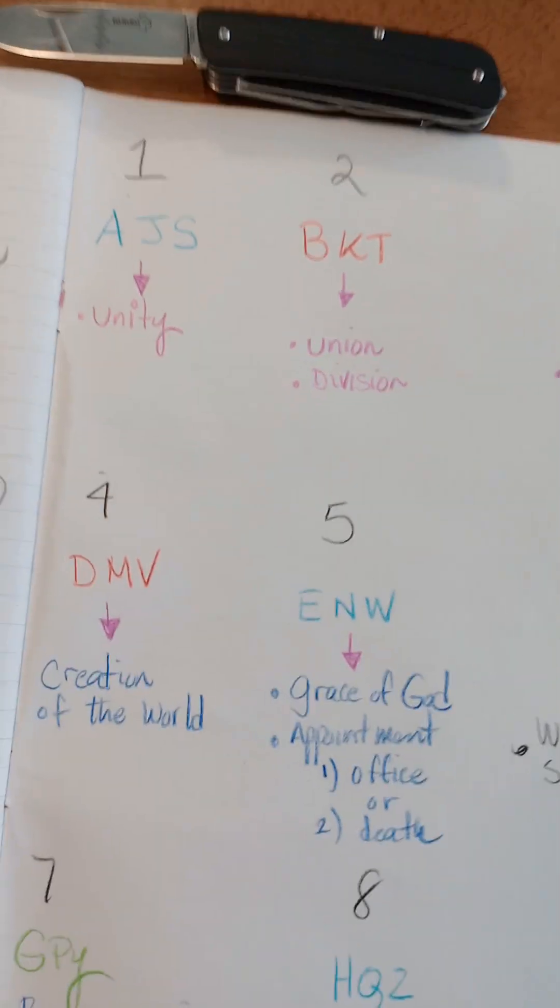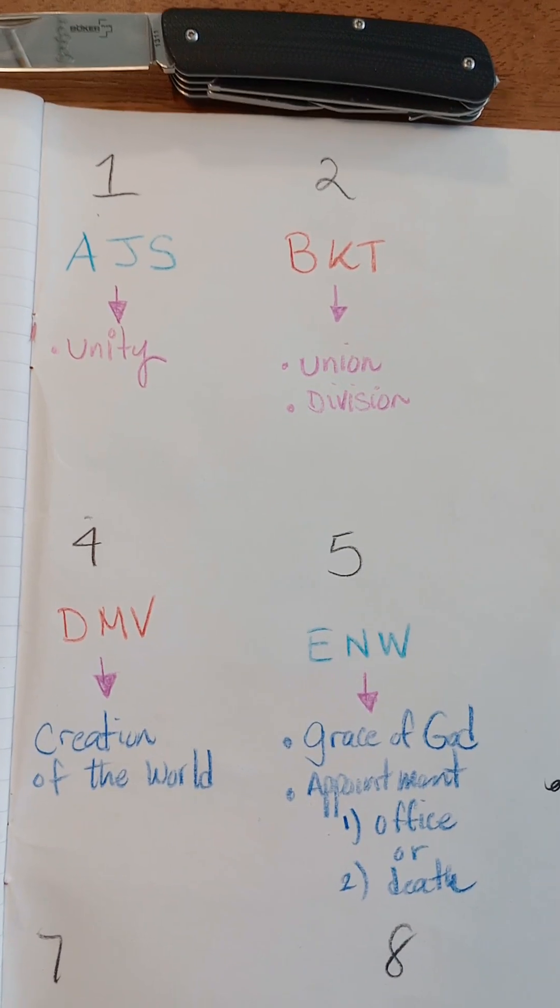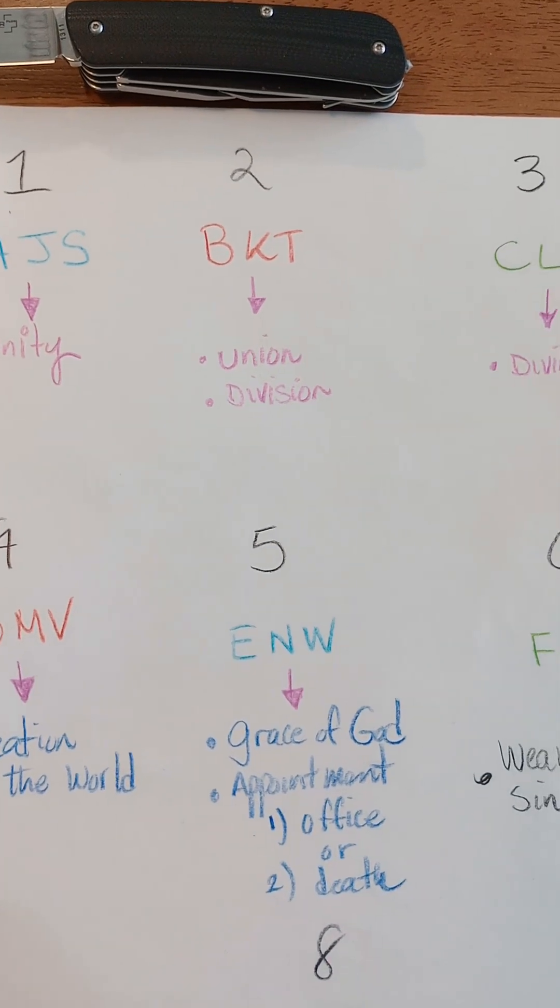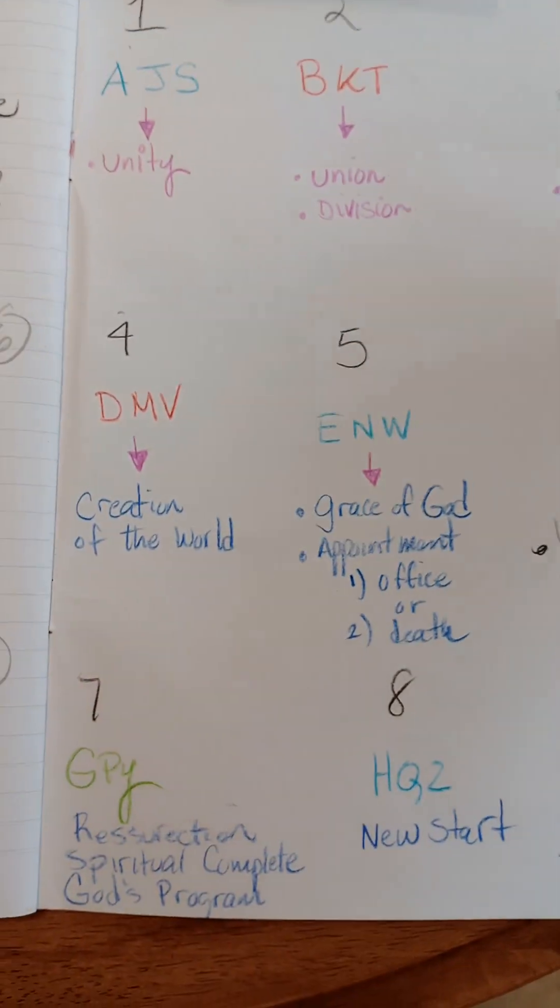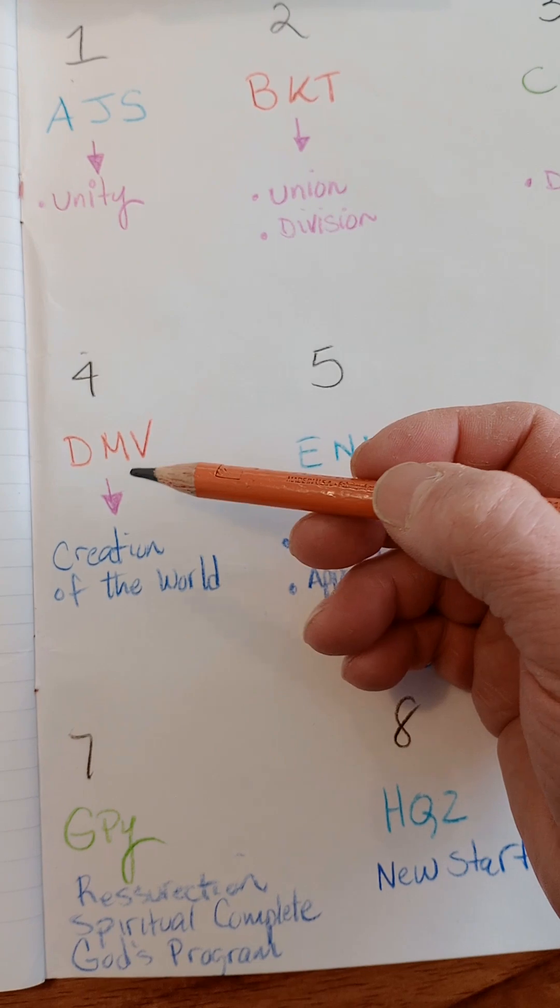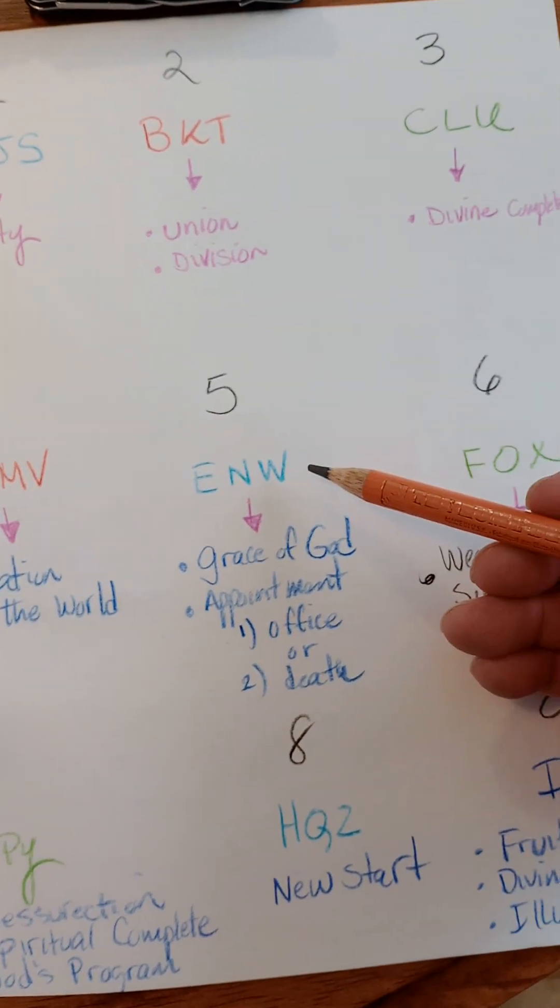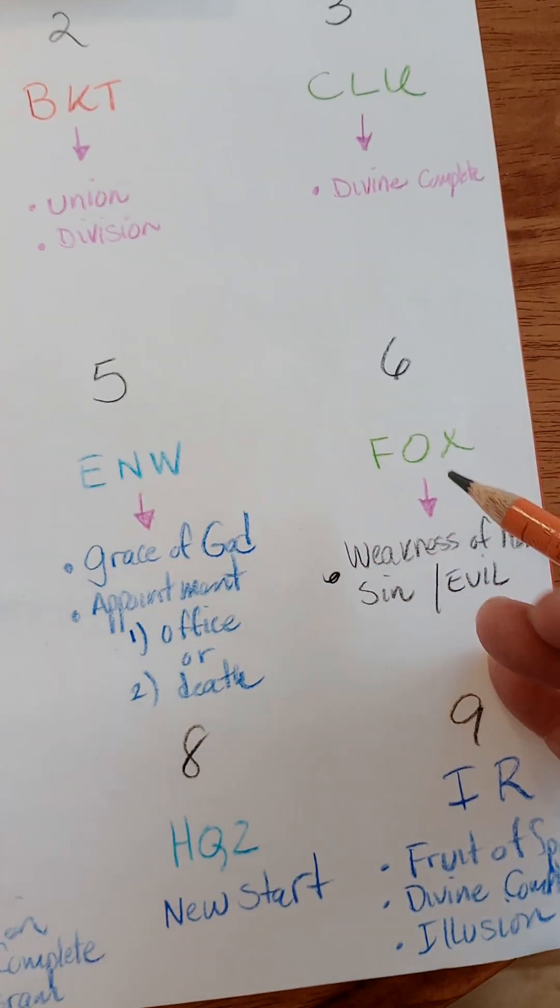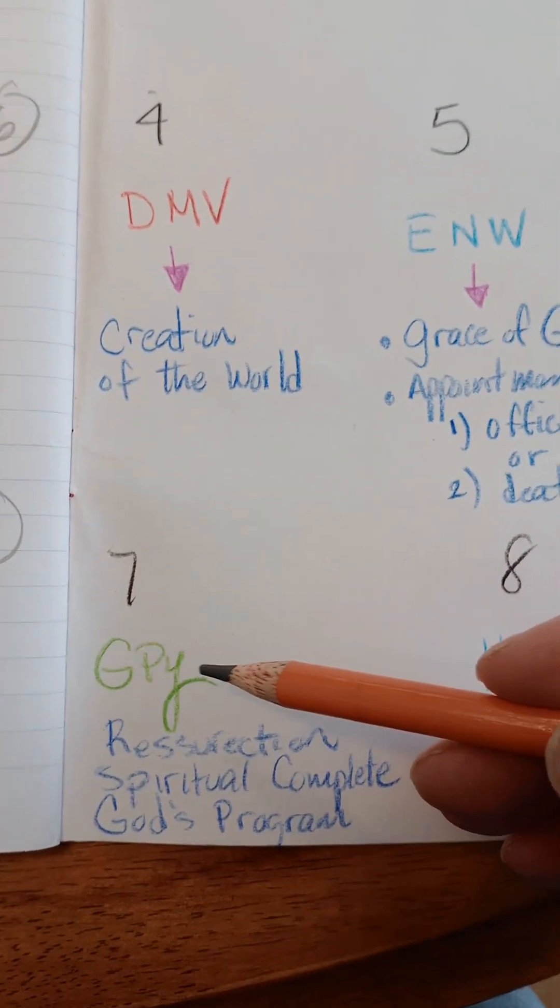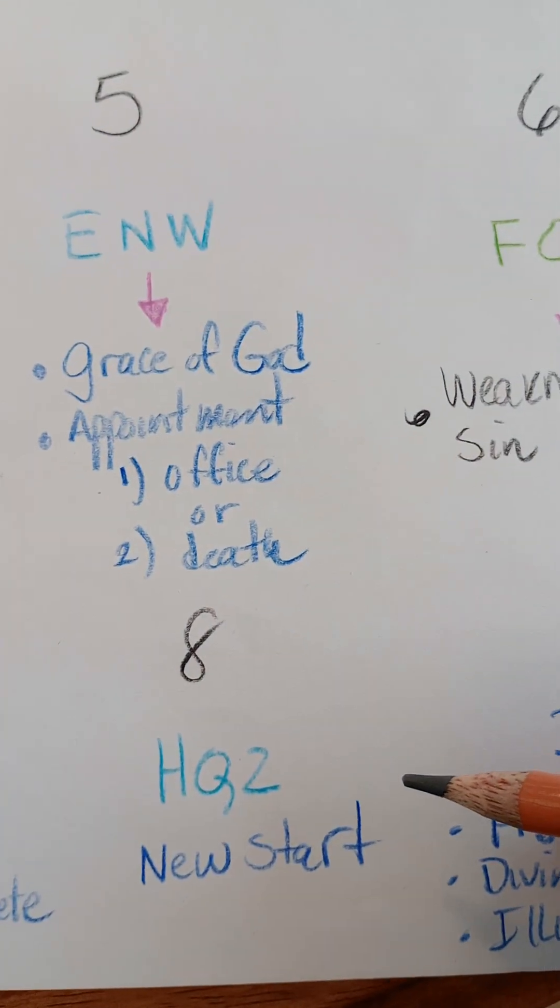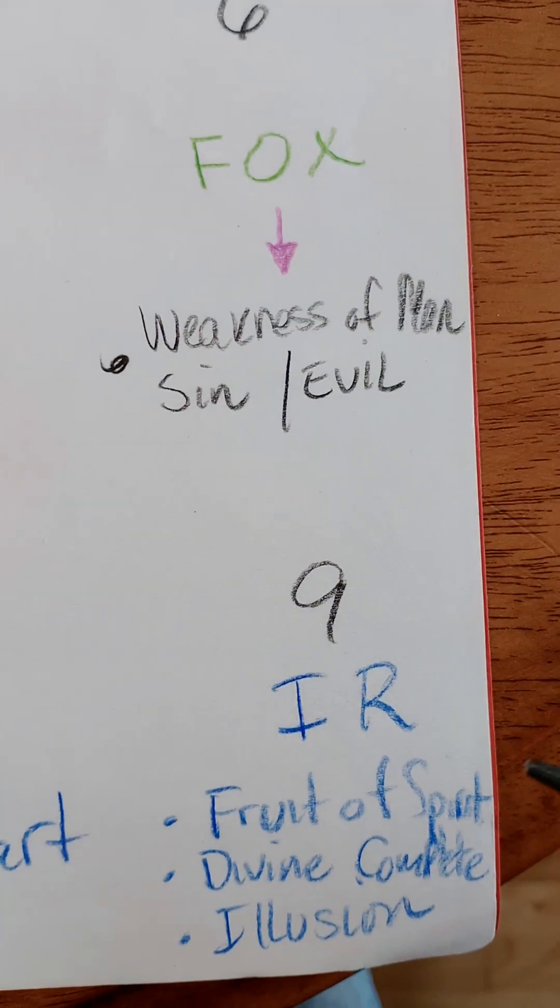So let's look at it. 1 is going to be AJS, 2 is going to be BKT, 3 is CLU, 4 is going to be DMV, 5 is ENW. FOX is a 6. GPY is a 7. HQZ is an 8. 9 is IR.